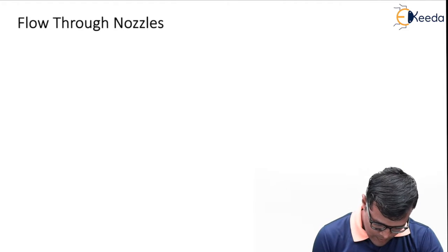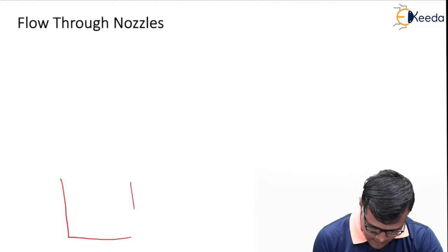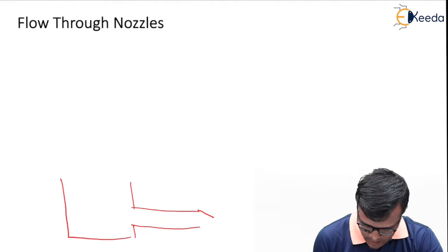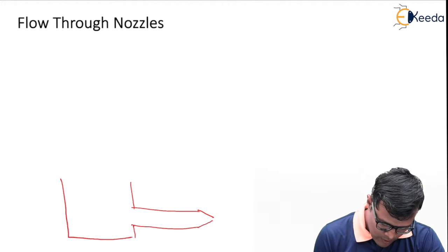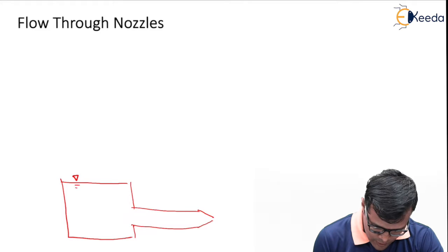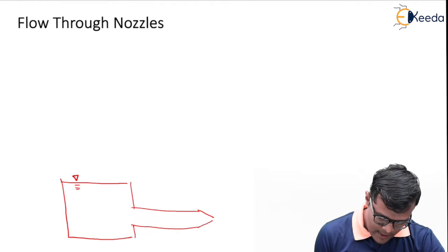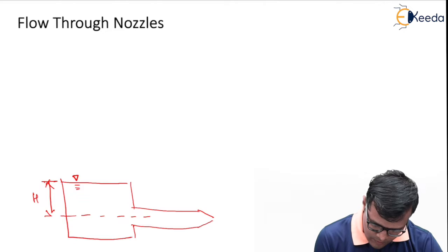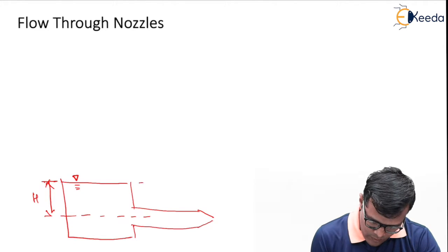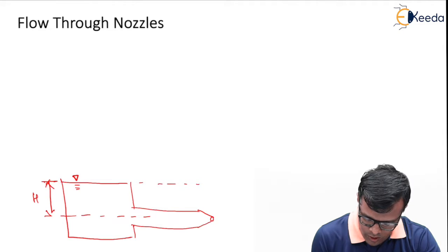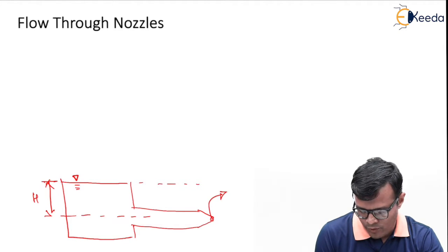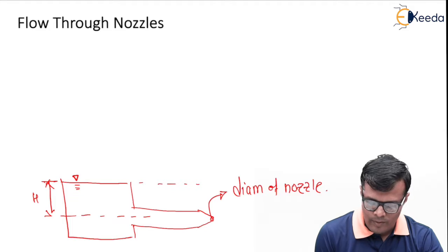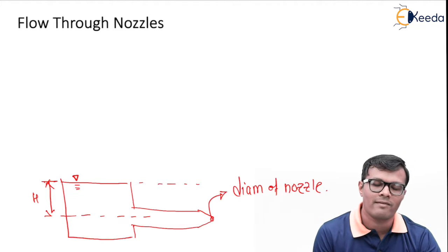Let us start with the derivation. We have a tank with a mouthpiece and a nozzle as shown in the figure. We will consider datum as capital H. Here we are going to solve an equation to find the diameter of the nozzle in the special condition where maximum power is being transferred.